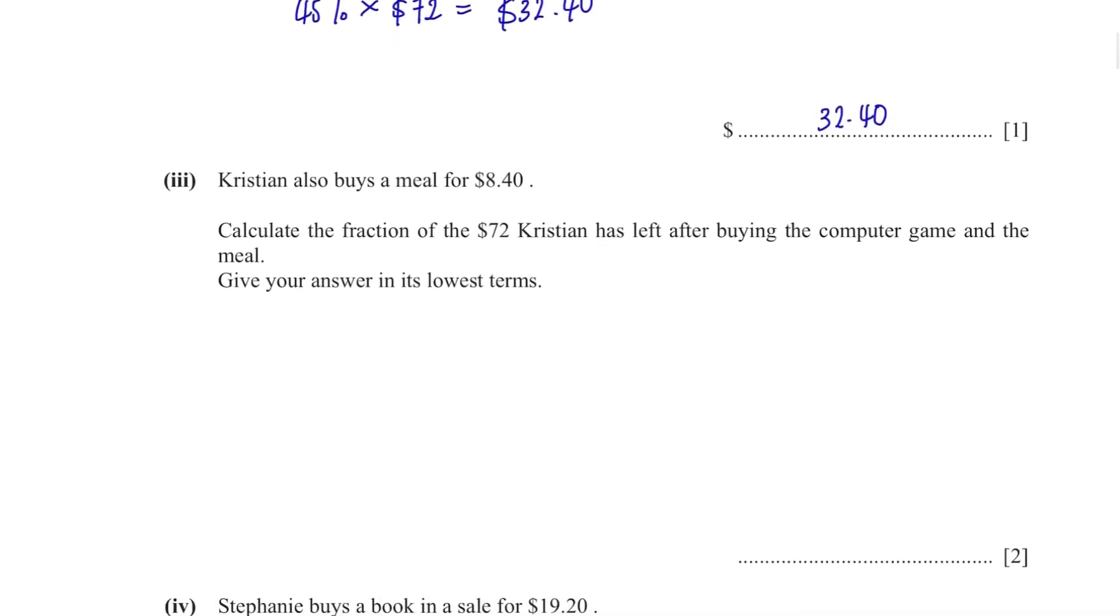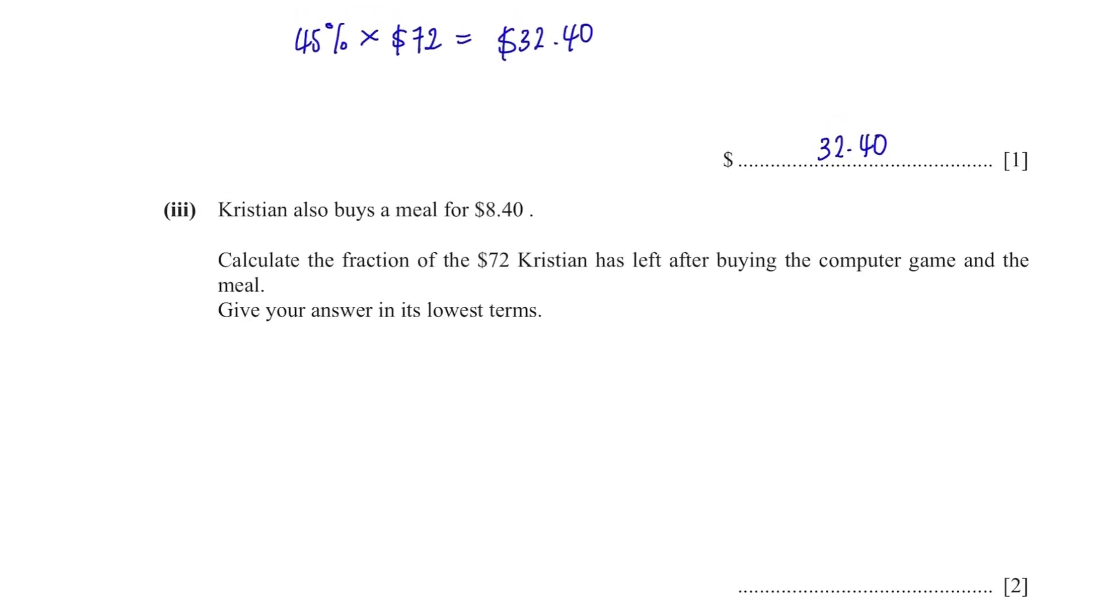Christian also buys a meal for $8.40. Calculate the fraction of the $72 Christian has left after buying the computer game and the meal. Give your answer in its lowest terms. Let's first calculate how much he has left. 72 minus 32.4 from the previous question and minus 8.4 equals 31.2. We need to find it as a fraction of $72. So 31.2 divided by 72. It's 13 over 30.